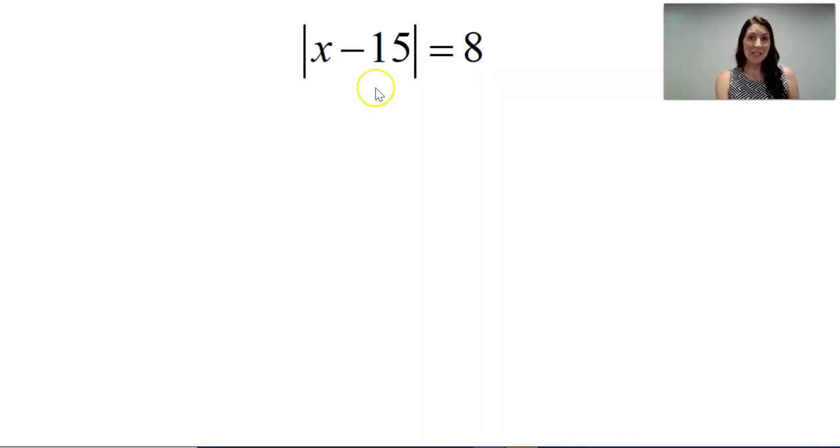In this next problem, this means the expression x minus 15 is 8 units away from zero. So what could the expression x minus 15 be? Well, x minus 15 could be equal to 8, since positive 8 is 8 units from zero. But x minus 15 could also be negative 8, because negative 8 is also 8 units from zero.